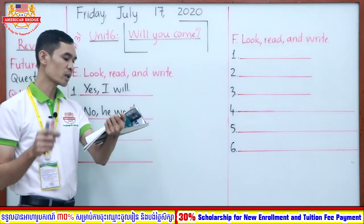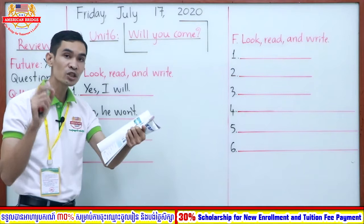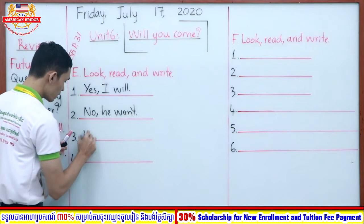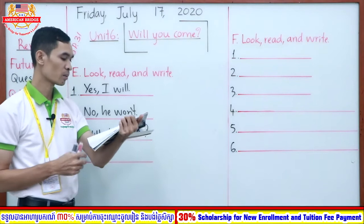How about number three? The answer is 'Yes, she will.' You can see the subject 'she' and 'will.' So how do you make the question? 'Will she...' right? 'Will she have money?' Very good. 'Will she have money? Yes, she will.'